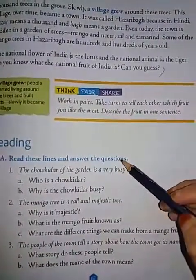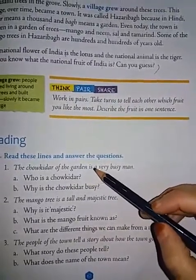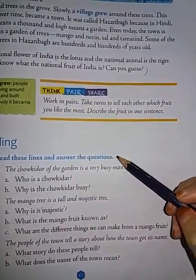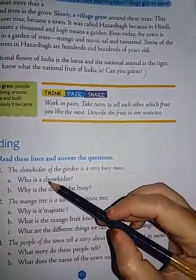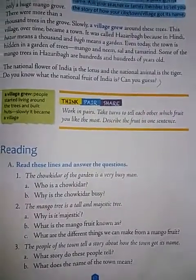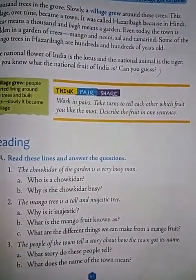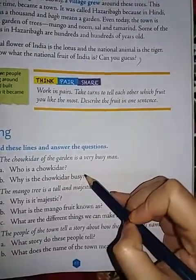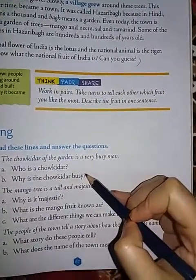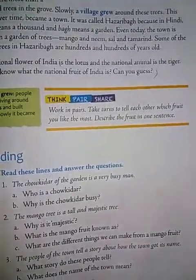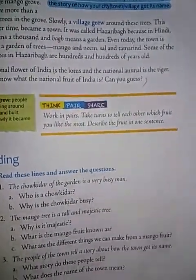Read these lines and answer the questions. First one: the chokidar of the garden is a very busy man. Option A: who is a chokidar? Chokidar is a person who guards a place. Next, option B: why is the chokidar busy? Because he is trying to keep out the naughty little boys and chasing away the birds and monkeys that come to eat the fruits.